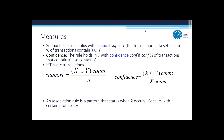Support is straightforward: if you're talking about X implies Y, you take the union of X and Y and see what percentage of all transactions in the total transaction database contain both X and Y — that is, X union Y. This is basically an indication of what percentage of the whole database your association rule is talking about.